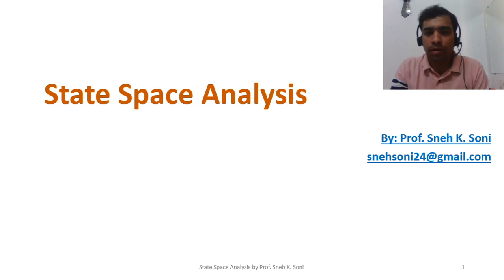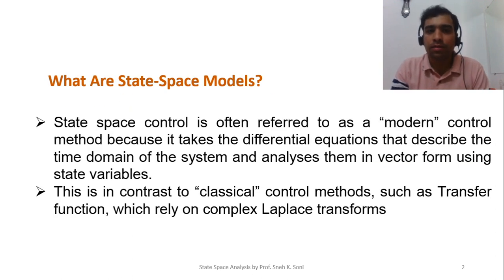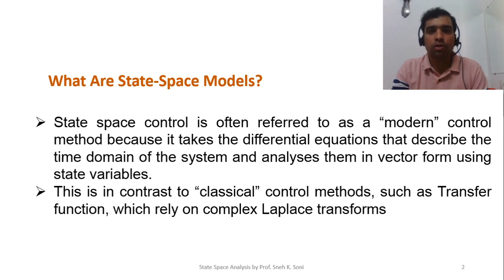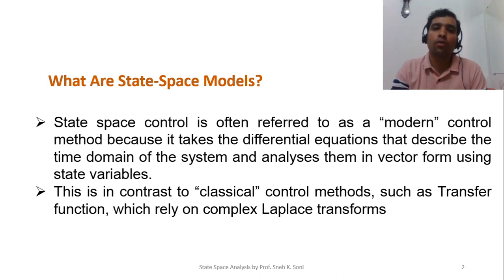State space control is often referred to as a modern control method because it takes the differential equations that describe the time domain of the system and analyzes them in vector form using state variables. This is in contrast to classical control methods such as transfer function, which rely on complex Laplace transforms. In short, state space is referred to as a modern control representation, whereas transfer function is the conventional control method.